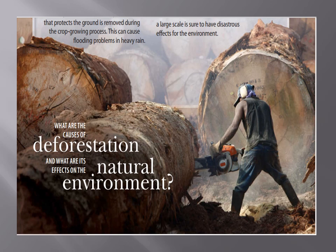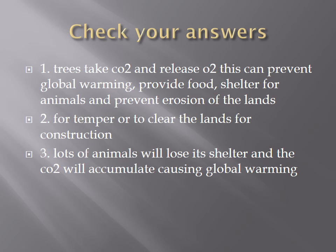Use your knowledge to predict the contents of the article and discuss your answers with your friends. Trees are very important to the environment because they take in carbon dioxide and release oxygen, which can prevent global warming. They provide food and shelter for animals and prevent erosion of the land. Trees are used for timber and to clear land for construction or agriculture. Cutting too many trees causes animals to lose their habitat, leading sometimes to extinction.